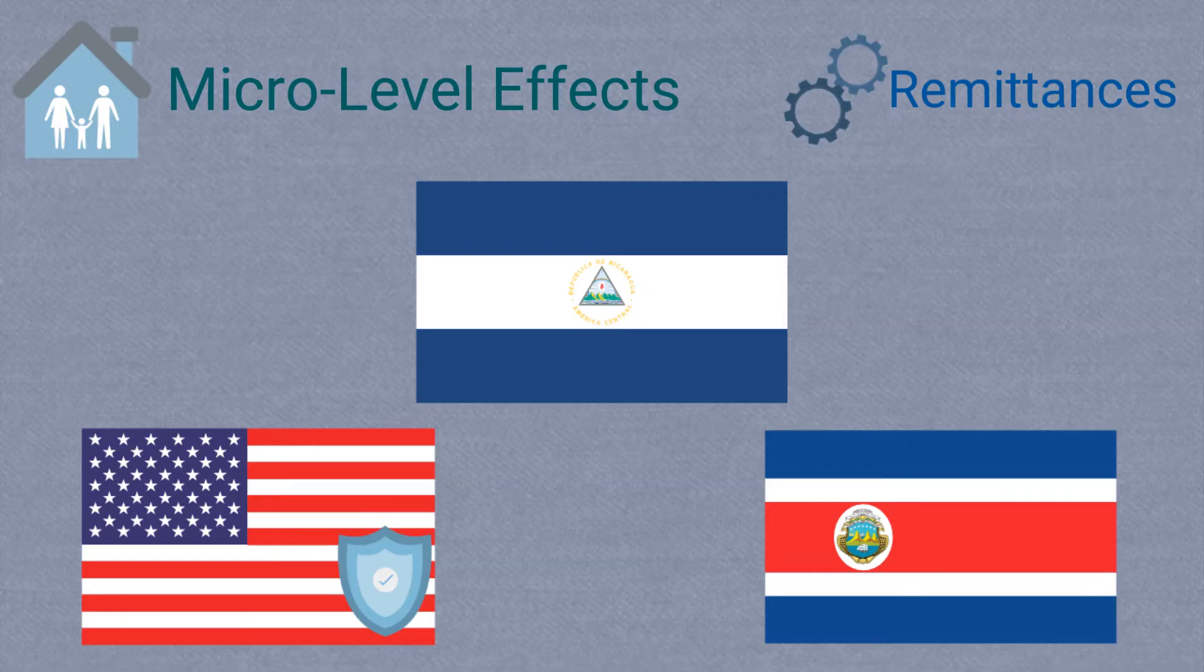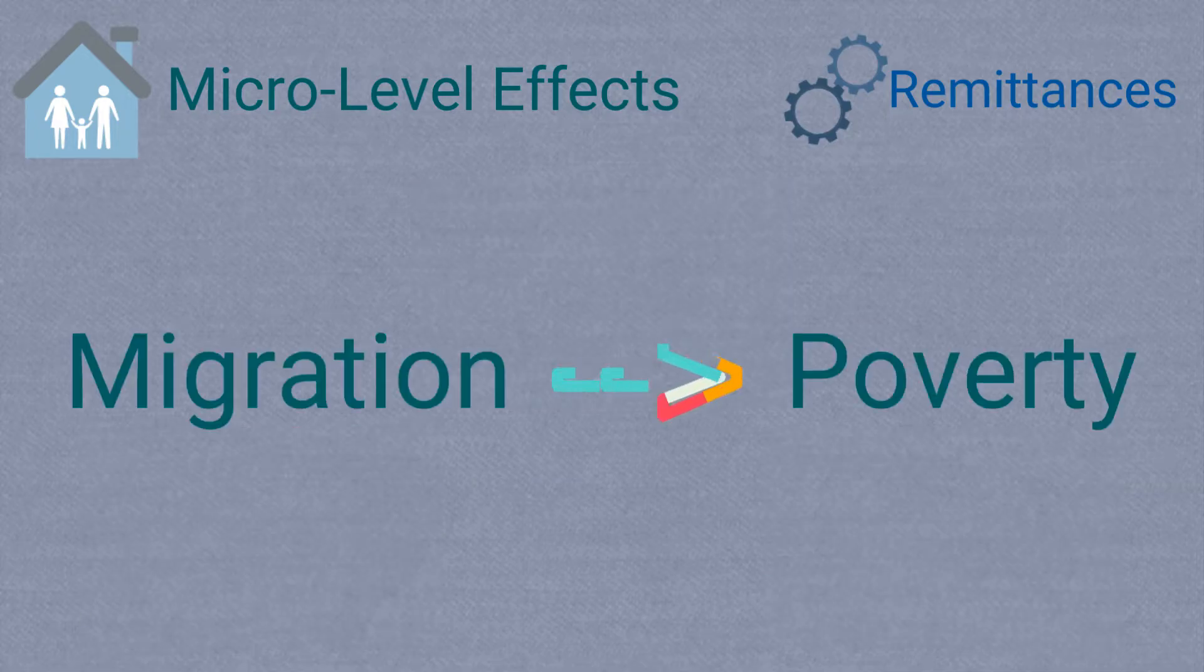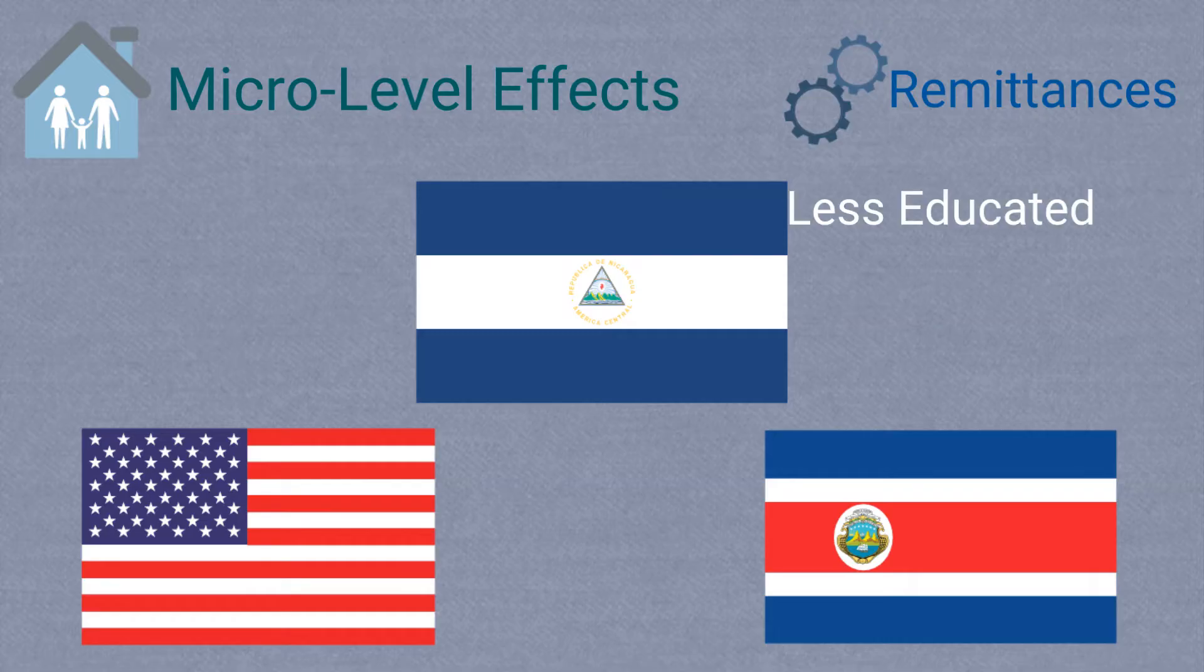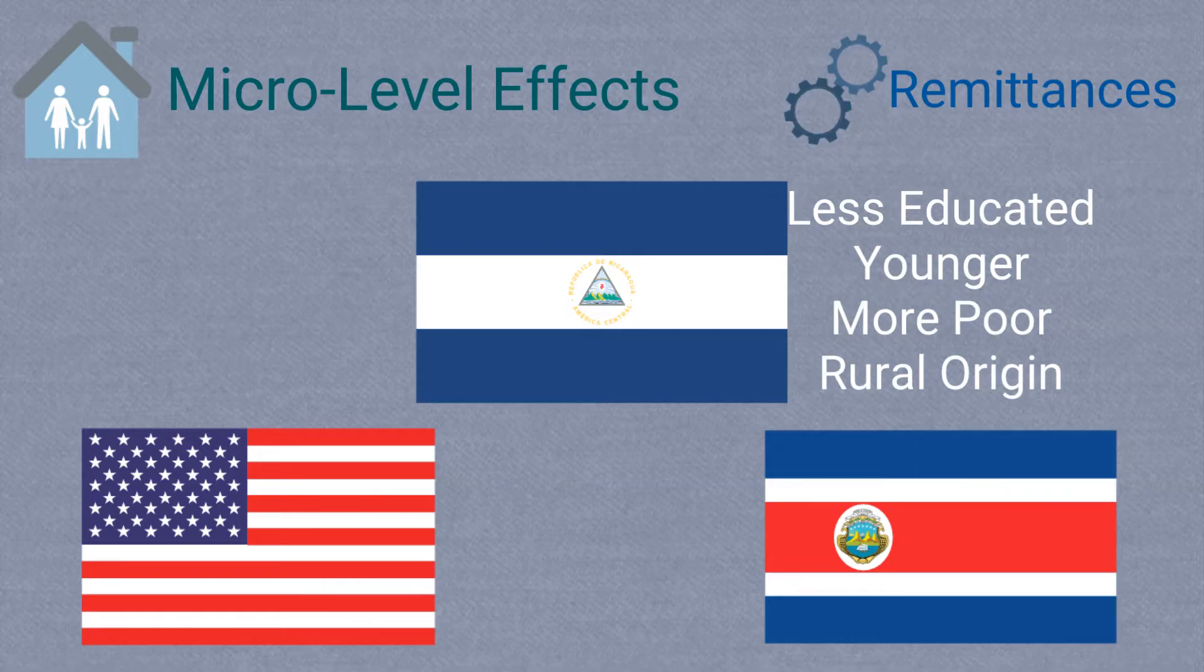The study uncovered that while migration affects poverty, poverty can also shape migration trends. Migrants traveling to Costa Rica generally had lower education levels, were younger, poorer, and came from rural areas. Migrants bound for the United States were considerably more educated and thus had a good shot of making it in their destination.